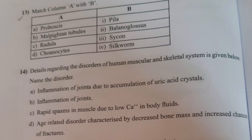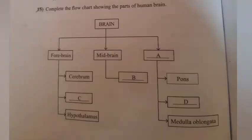Question 14: Details regarding disorders of human muscular and skeletal system are given. Name the disorder. A. Inflammation of joints due to accumulation of uric acid crystals. B. Inflammation of joints. C. Rapid spasms in muscle due to low Ca++ in body fluids. D. A disorder characterized by decreased bone mass and increased chances of fractures. Answers: A. Gout, B. Arthritis, C. Tetany, D. Osteoporosis.